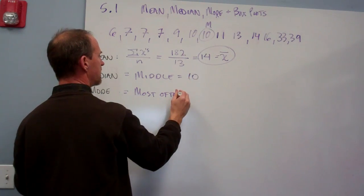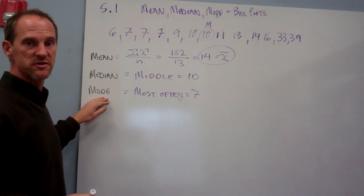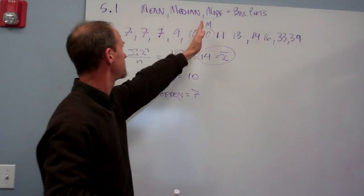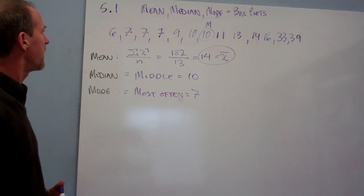repeating most often, and that's seven. Sometimes a very useful number, sometimes rather misleading. In this case, it doesn't really tell us about the center of this data, but yet there it is.